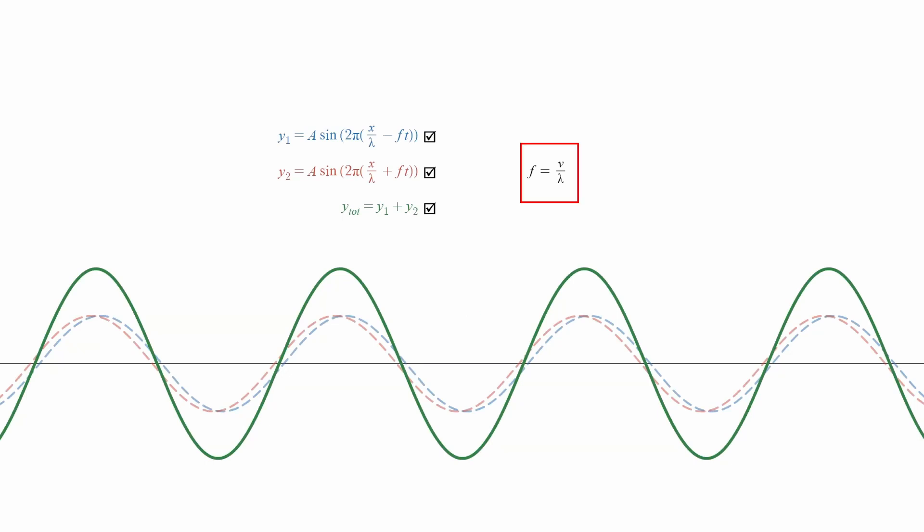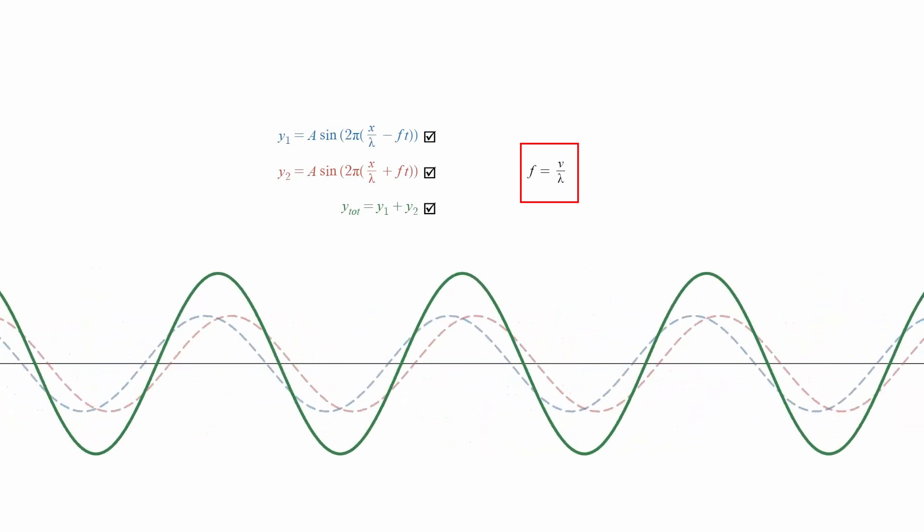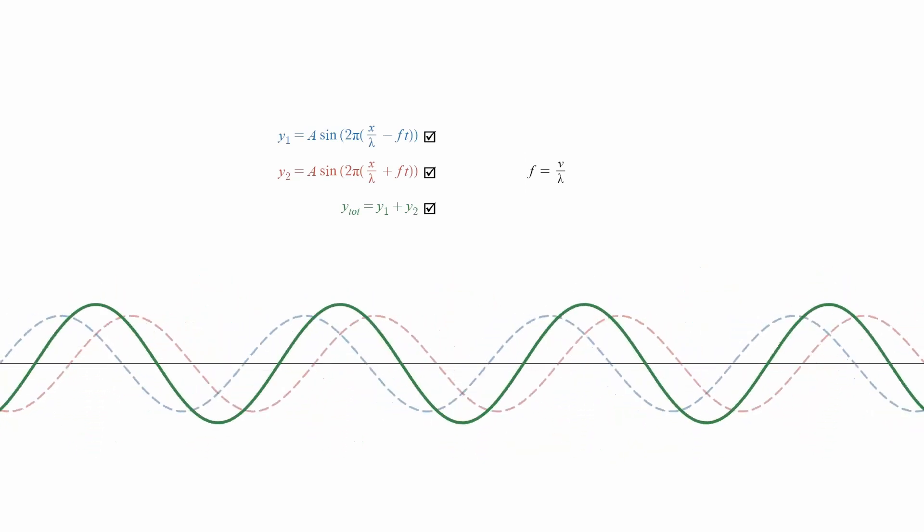The frequency, f, of the wave is then equal to the ratio of the speed, v, of the wave in the string and the wavelength, lambda. The note perceived by the ear is linked to this frequency.